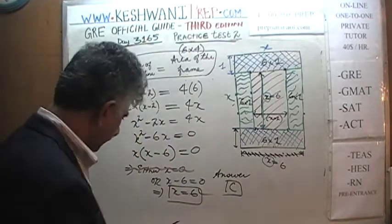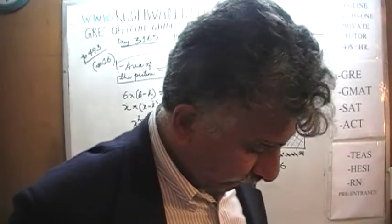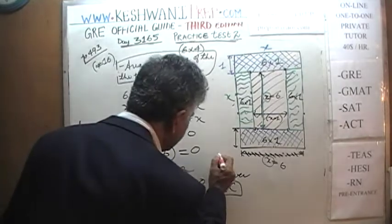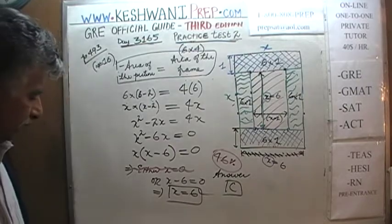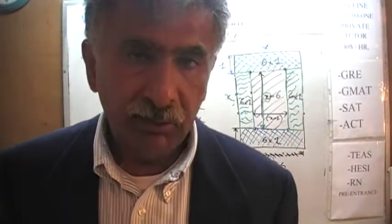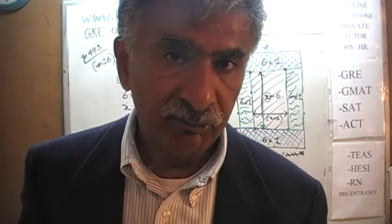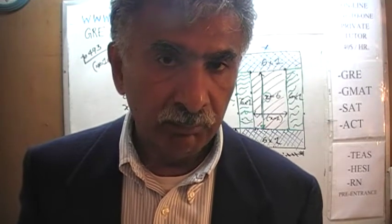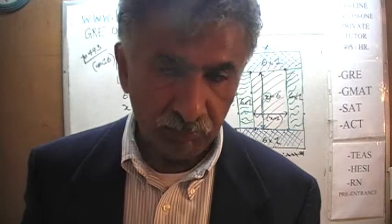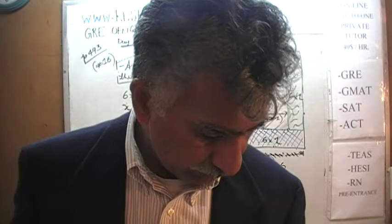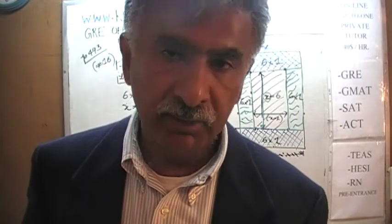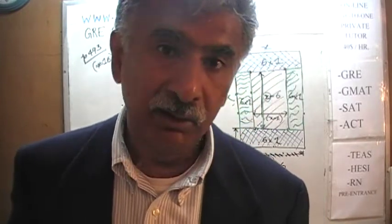The answer is X equals 6, which is answer choice C. We can verify: the frame area is 4 times 6 equals 24; the picture area is 6 times (6 minus 2) equals 6 times 4 equals 24 — they are equal. Only 46 percent of people got this question right. Next time we'll tackle problems 17 through 20 on page 494, which are all based on a single graph or chart.